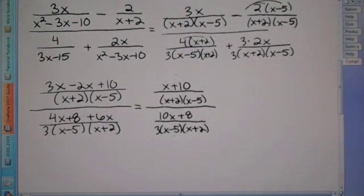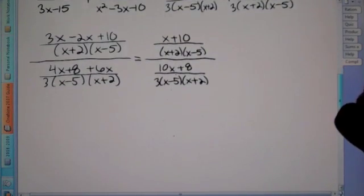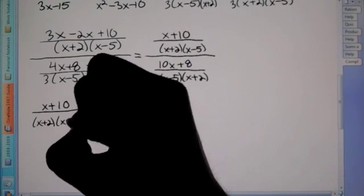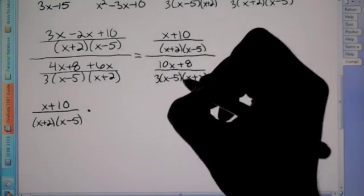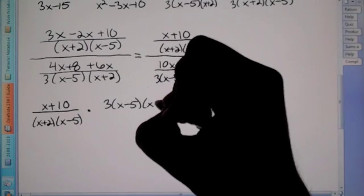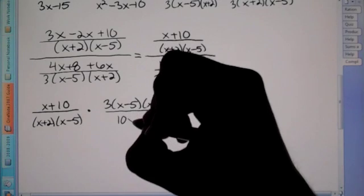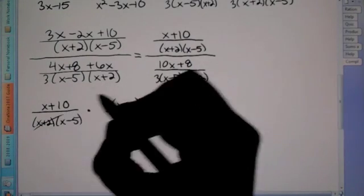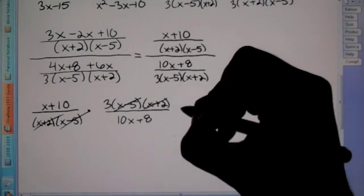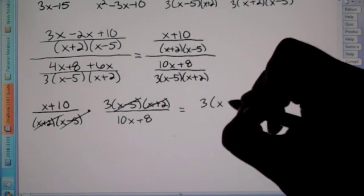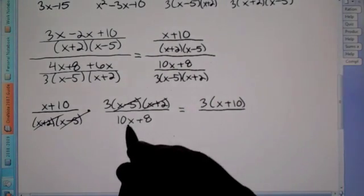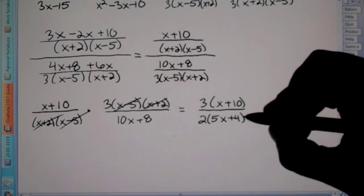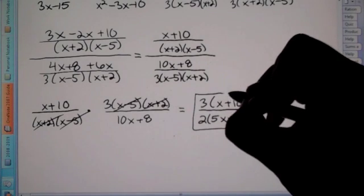Now we're going to combine like terms here. We have 10x plus 8 over 3 times x minus 5, x plus 2. But again, you cannot leave a fraction within a fraction for your answer, so what we're going to have to do is change this to a multiplication problem. Rewrite the top the way it is over x plus 2 times x minus 5, and change this to a multiplication by flipping the bottom one — so this becomes 3 times x minus 5 times x plus 2 over 10x plus 8. Now you'll notice we can cross out the x plus 2's and the x minus 5's. All we're left with on top is the 3, and then in parentheses we put our x plus 10. Remember, always factor out as much as possible — here we can factor out a 2, leaving 5x plus 4. Nothing else reduces, so this would be your final answer.